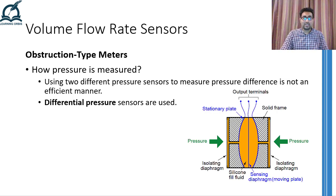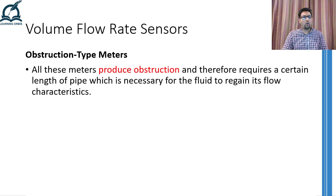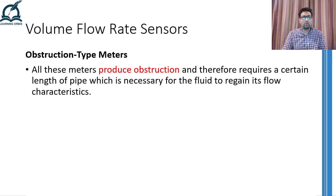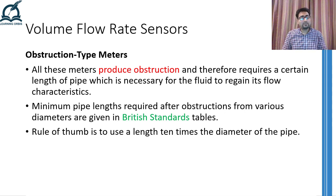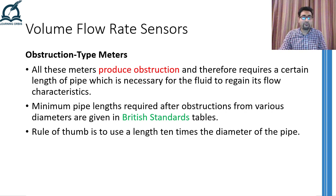Mostly diaphragm type pressure sensors are used in such situations. As all obstruction type meters produce a permanent pressure drop and disturb the flow characteristics, a certain length of pipe is required after the obstruction for the fluid to regain its flow characteristics. How much length of straight pipe is required can be found using British standard tables. However, especially in process industry, a rule of thumb is to use at least a length equal to 10 pipe diameters after the obstruction.